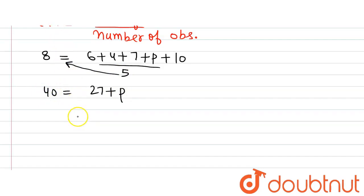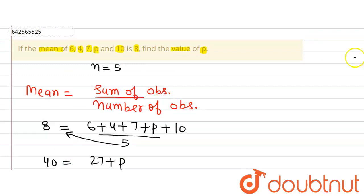On solving it, we will get p is equals to 27, p is equals to 40 minus 27 which will give us p is equals to 13. So, the value of p is 13 and this is what we were supposed to find in this question, that find the value of p when the 5 observations 6, 4, 7, p and 10 have a mean of 8. That's all. Thank you.